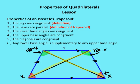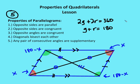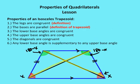Any lower base angle is supplementary to any upper base angle. Going back to our discussion: the sum of all angles in a quadrilateral is 360 degrees. In a trapezoid, the two lower base angles are congruent and the two upper base angles are congruent, so two red plus two green equal 360 degrees — meaning one green plus one red equals 180 degrees, so a lower and upper base angle are supplementary.